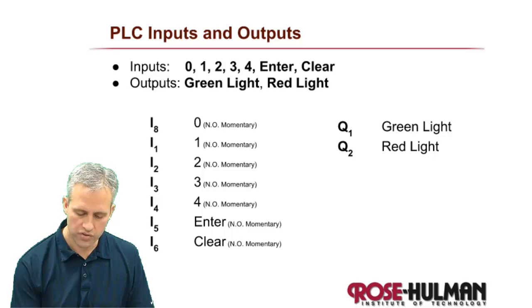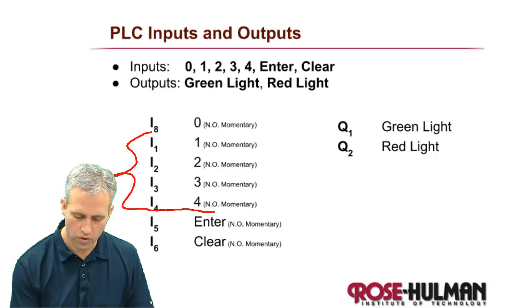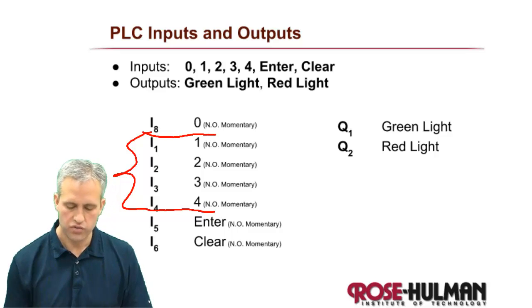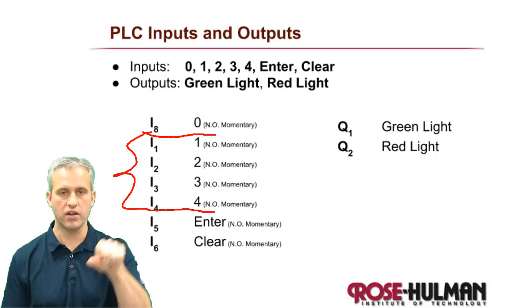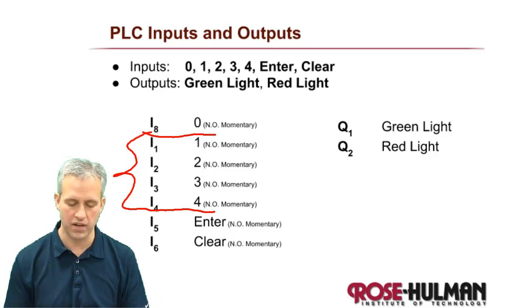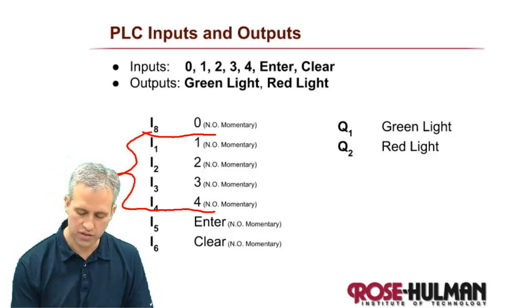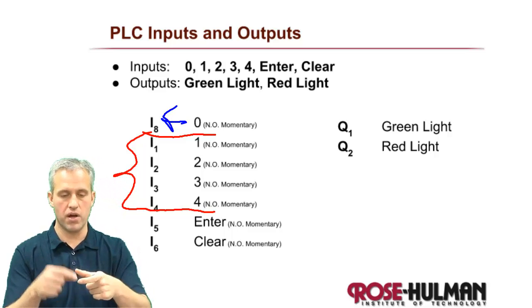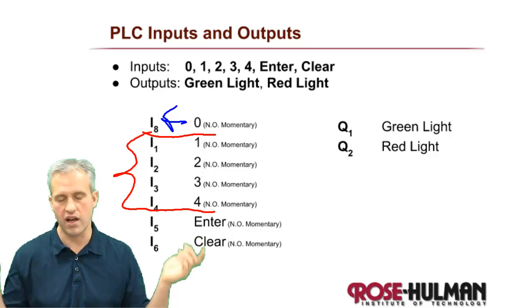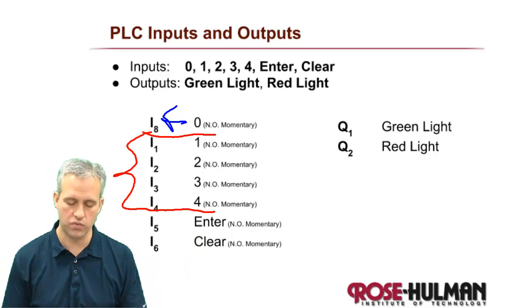So what I chose to do is I chose to make 1, 2, 3, and 4 kind of make sense, right? So I put button number 1 to I1, button number 2 to I2, 3 to 3, 4 to 4. That makes sense. There is no I0, so I decided that the 0 button, it's like some button that has to get wired somewhere. I took it to I8. I just kind of picked that. That's where I decided to go.